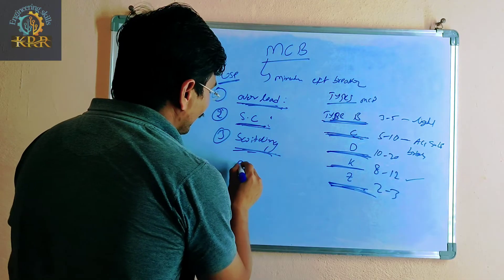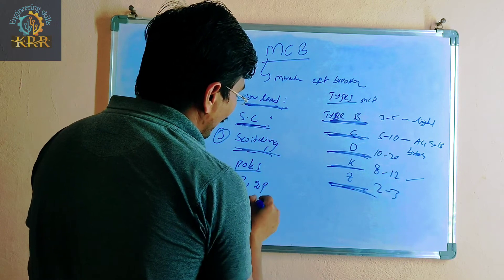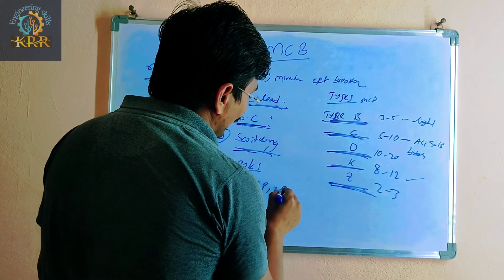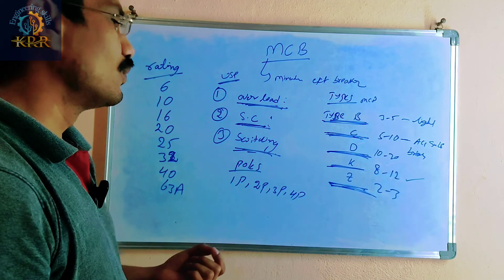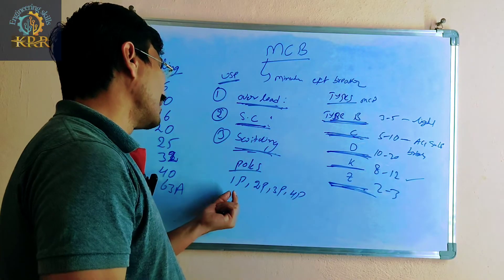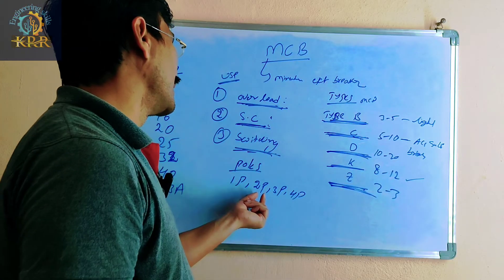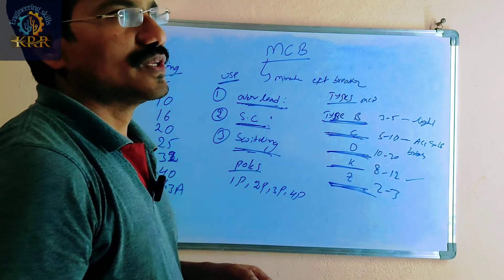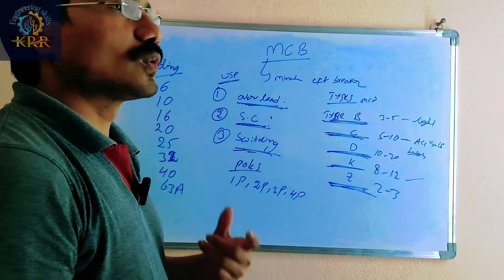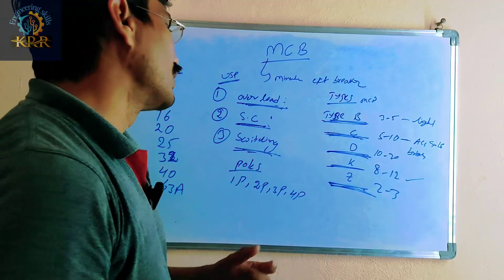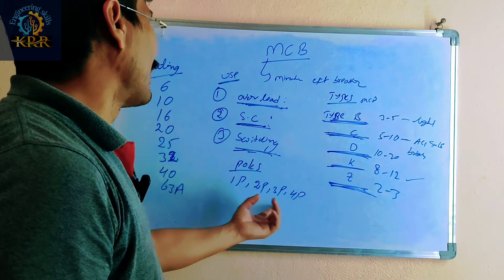MCBs are available in single pole, two pole, three pole, and four pole configurations. Single pole is used for one phase; two pole for phase and neutral; three pole for three-phase supply; and four pole for three-phase plus neutral, as per the requirement.